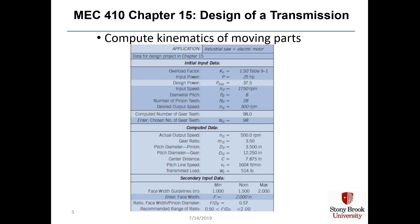First thing you have to do is compute the kinematics of the moving parts. You are given typically some speeds and some torques, or perhaps you're given the horsepower and some speeds of the various shafts, and you have some information on the gears but maybe not all of it. So you have to calculate the output speeds of the shaft, pitch diameters of pinions and gears, center distances, and angular velocities.